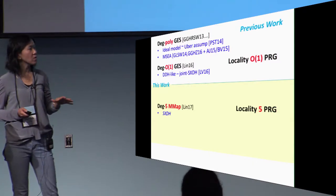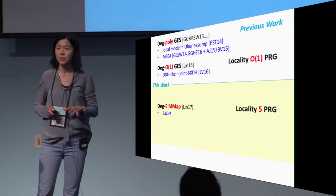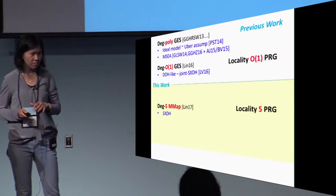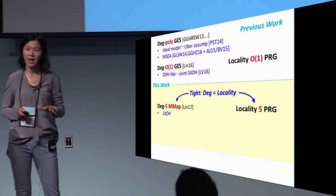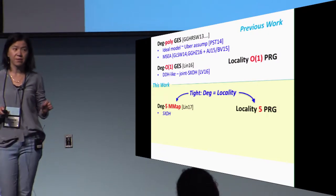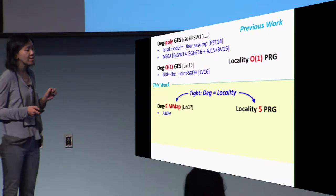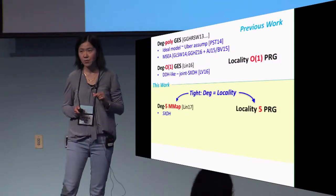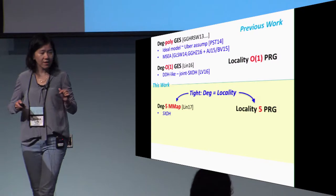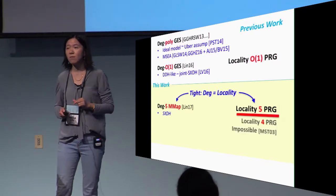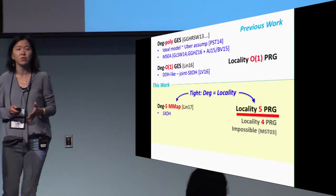For the first time, the local PRG came into the picture. In this work, in the first paper we first reduced the concrete constant degree needed all the way down to 5 using a locality 5 PRG. Also, we weakened the security assumption on the multilinear map to just SXDH. The important feature of this construction is that for the first time the degree of the multilinear map depends solely on the locality of the PRG and they're equal, whereas previous constructions are not tight.